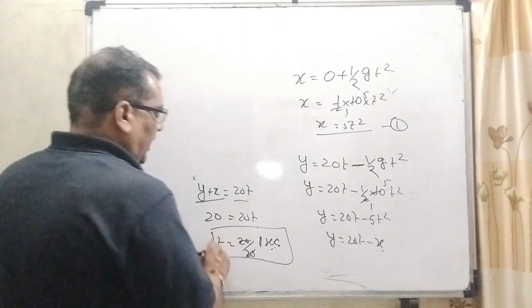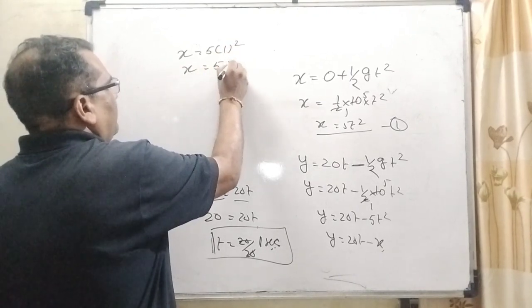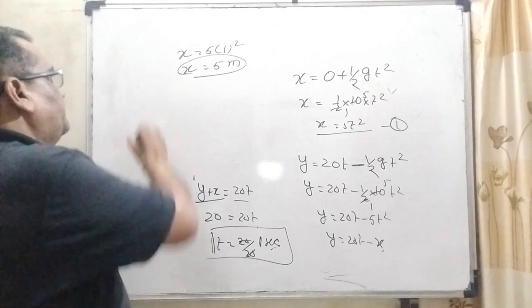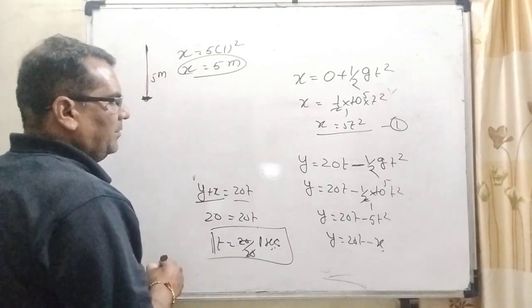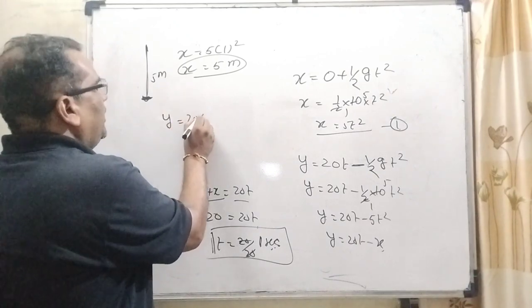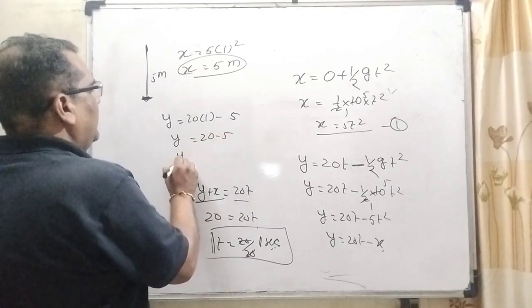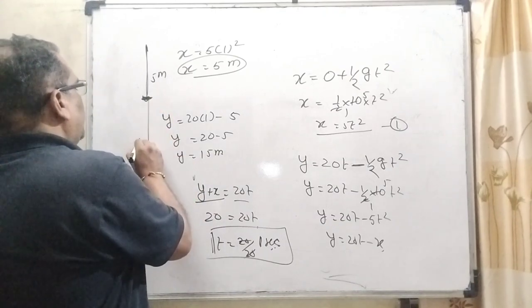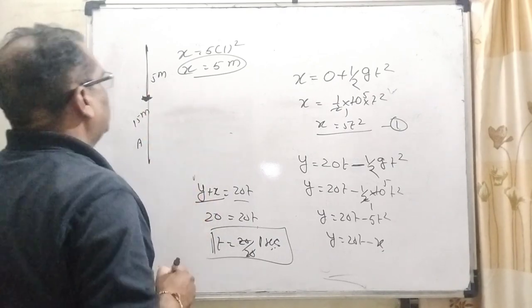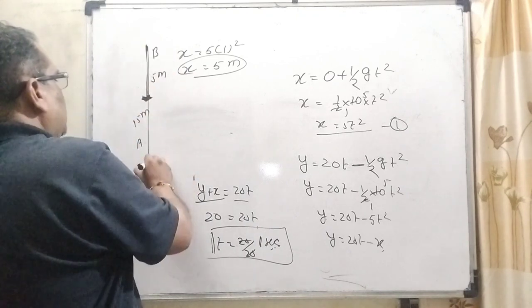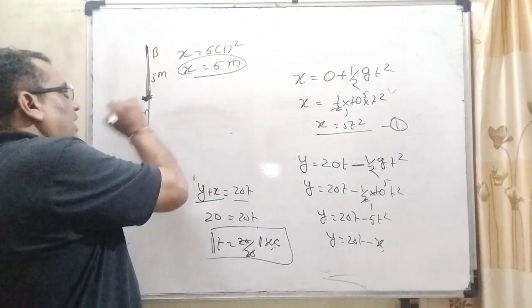Now, after getting the time t equal to 1 second, substitute this value. x equal to 5 into 1 square, that is 5 meters. So object B falls 5 meters at the point of collision. And what is the distance covered by A object? 20 into 1 minus 5, so y equal to 20 minus 5, then y equal to 15 meters. So object A covers 15 meters.